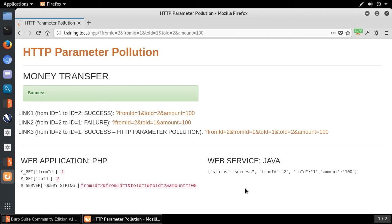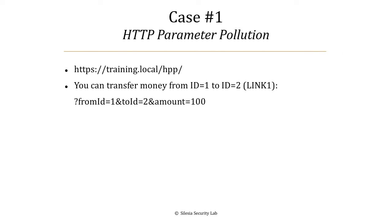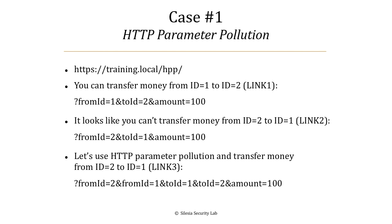Let me jump to the slides to summarize. We can transfer money from ID=1 to ID=2 normally, but in the reverse direction we cannot — which is obvious. But when we use HTTP parameter pollution, we can bypass authorization and send $100 from another account to our own account. This is an extremely powerful attack. All these steps should now be clear, and we are done with this case.